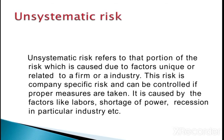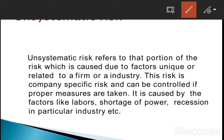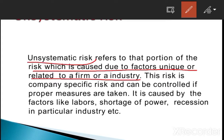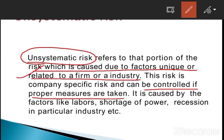Now we talk about unsystematic risk — that is under the control of the company. It is the portion of risk caused due to factors unique or related to a firm or industry. The factors within a firm or industry affect the risk and the return. This risk is company-specific risk. Systematic risk depends upon the market and is not directly related to a company or industry, but unsystematic risk arises because of factors related to the firm and industry. This risk can be controlled if proper measures are taken — good policies and strategies. These kinds of risks include labor issues, shortage of power, and recession in a particular industry.